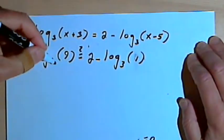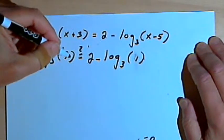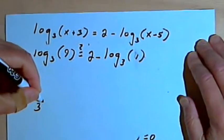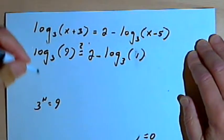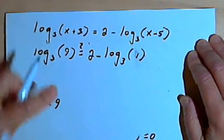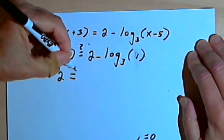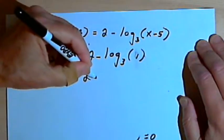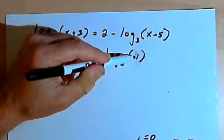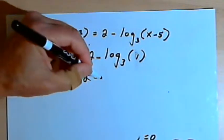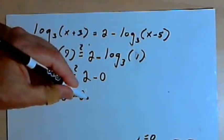So the log base 3 of 9, let's assume that log base 3 of 9 equals n. So in exponential form, that's going to be 3 to the n equals 9. So n must be 2. So the log base 3 of 9 would equal 2. And then I'm going to have 2 minus the log base 3 of 1. Well, whenever you're taking a log of 1, you know the answer is going to be 0. So what I've got here is 2 equals 2 minus 0 or 2 equals 2.